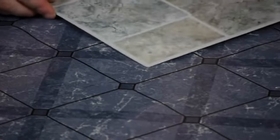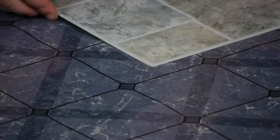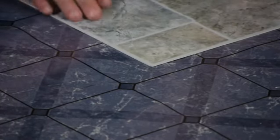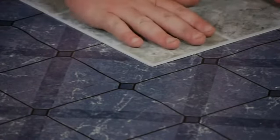Now that we have a nice square X on the floor, we're going to take our first tile, put it right in the middle of that X, make sure that your lines are running straight, and press down.